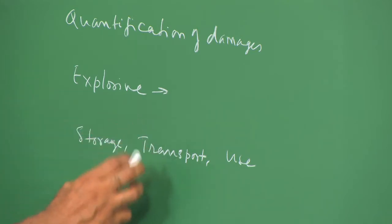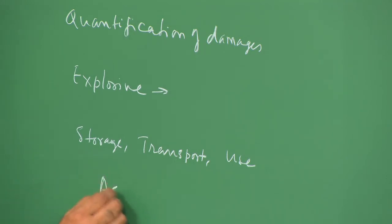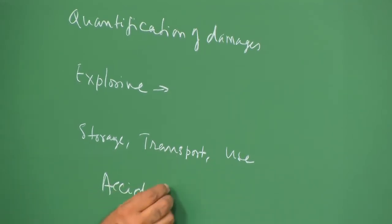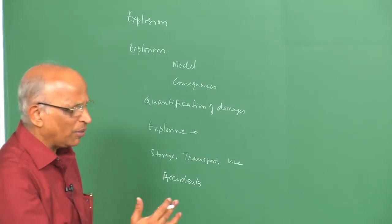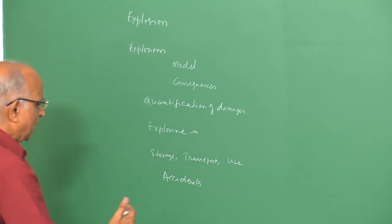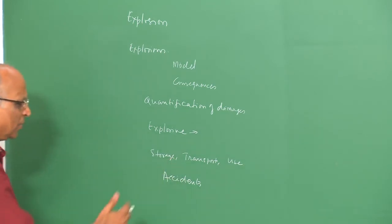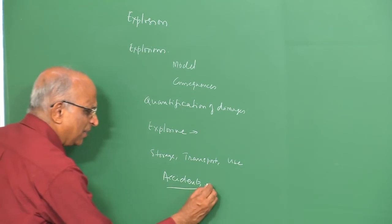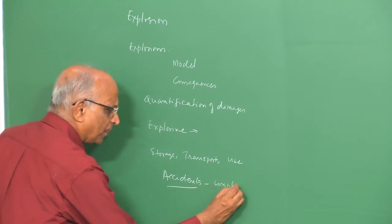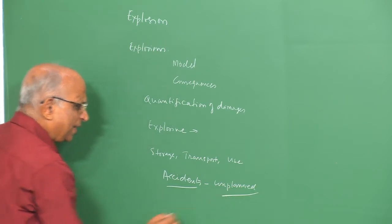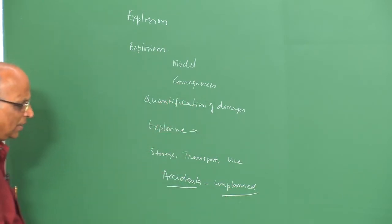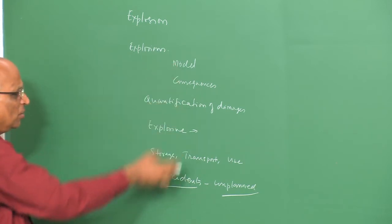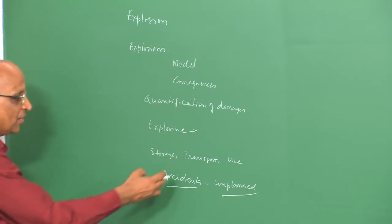Whatever be the type of safety criterion we use, accidents do happen. For instance, even if I am very careful crossing the road and take all precautions, somebody can still come and hit me. Therefore, accidents are unplanned activities. Being unplanned, it is necessary to see under what conditions accidents can take place and ensure that accidents in the use of explosives do not generally occur.